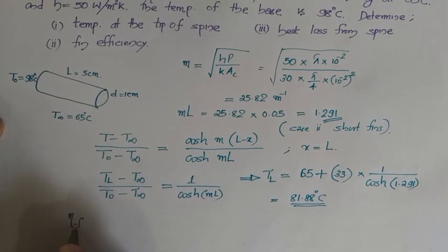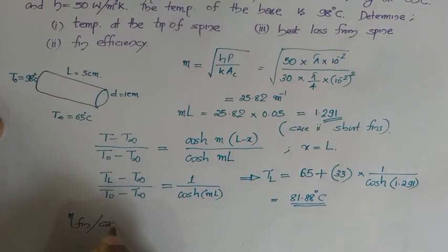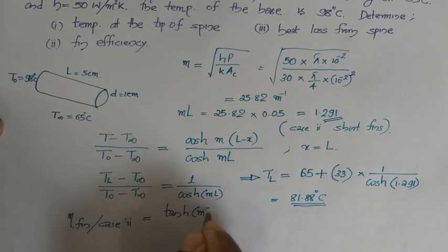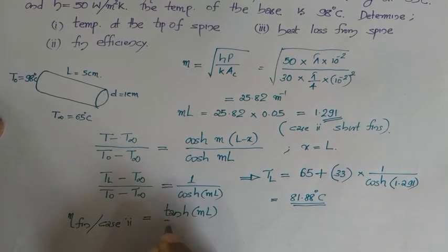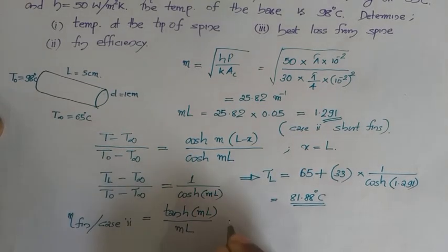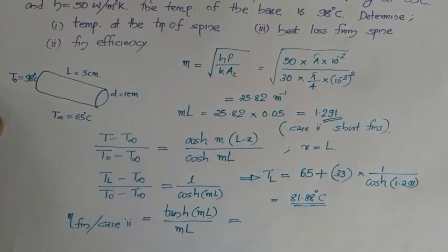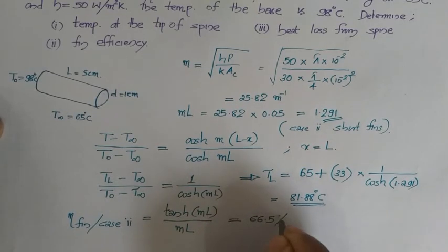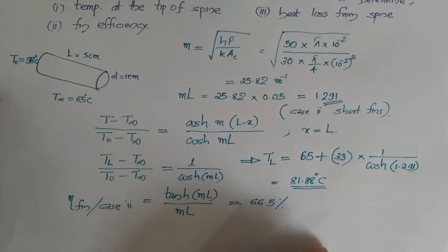Next we evaluate the fin efficiency. This is a Case 2 fin, and the fin efficiency for Case 2 is tanh(ML) divided by ML. Substituting ML = 1.291, we get the efficiency of fin as 66.5 percentage. This is the answer for the second part.